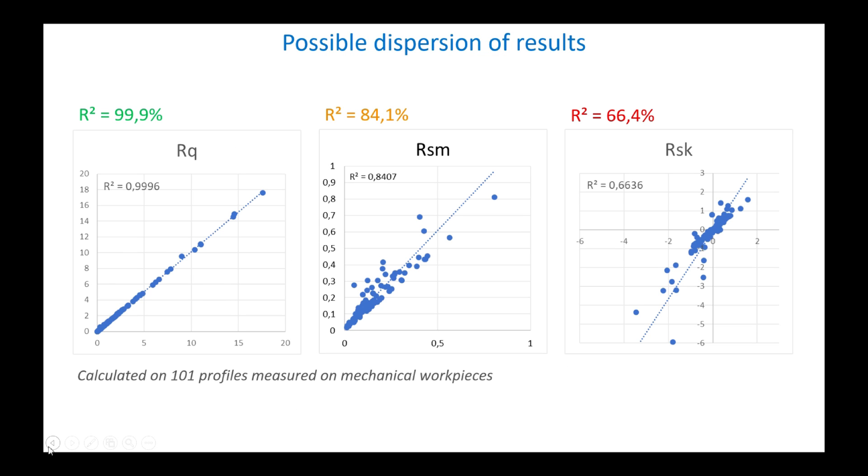When we compare parameters from the two standards calculated on the same profiles, we note discrepancies which are linked to differences in the definition of the parameters and to changes in the process of preparing the primary profile. Some parameters are particularly sensitive, such as RSK or RKU. Others barely change like RA, RQ, or RDQ. It is therefore recommended to check your data and recalculate the parameters with the new standard to see if it is necessary to adjust the tolerances on drawings. However, this should not prevent industry and research from adopting the new ISO 21920 standard for new projects.